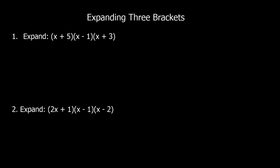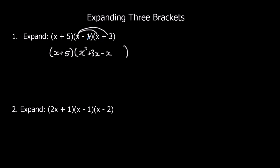We're going to ignore the first bracket, leaving x plus 5, and expand the second and third brackets. x times x is x squared. 3 times x is 3x. Negative 1 times x is negative x. And negative 1 times positive 3 is negative 3. Collecting the like terms: x squared plus 2x, take away 3.